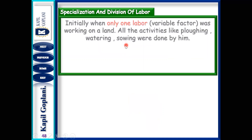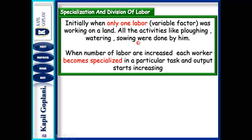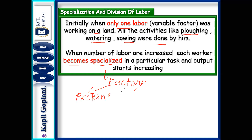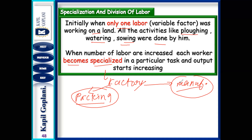The third cause is specialization and division of labor. Initially when only one labor was working, all the activities were done by him — plowing, watering, sowing. But as labor increases, everyone has their own work. In a factory, one person will only do packing, and another will only do manufacturing. This leads to specialization and division of labor.